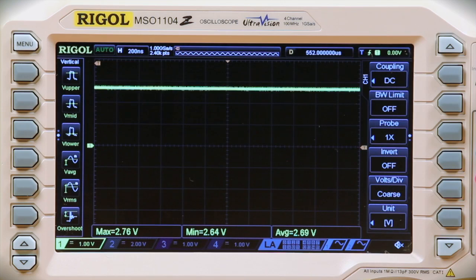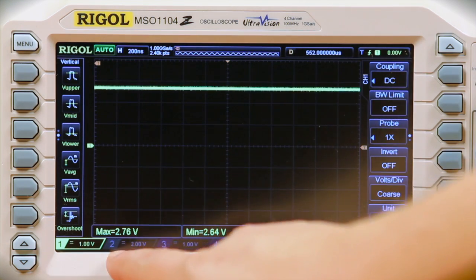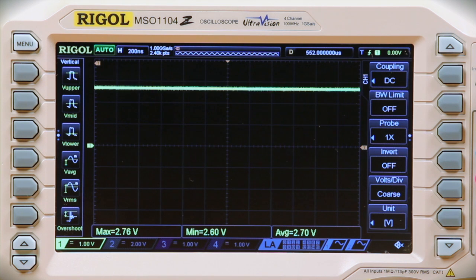The coupling setting is found in the individual channel menus and shown at the bottom of the screen for each channel at all times. In DC mode, the scope displays both the DC and AC values of the signal.